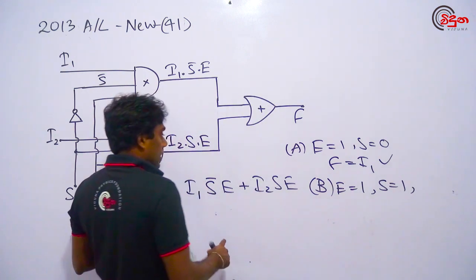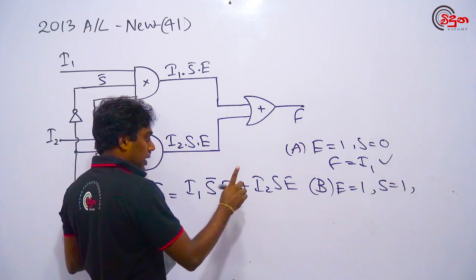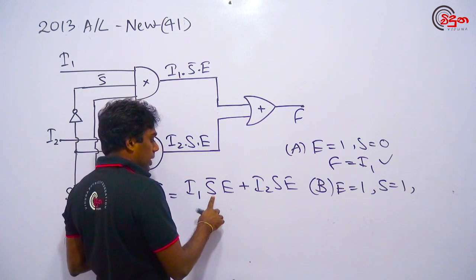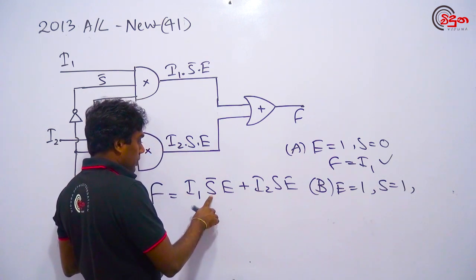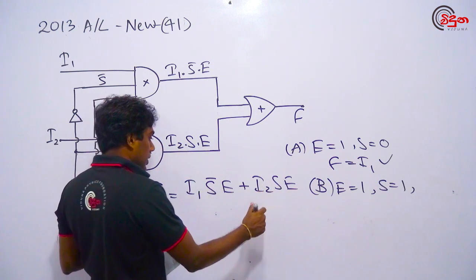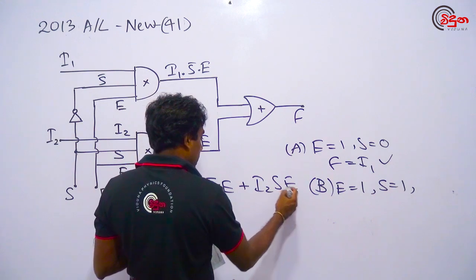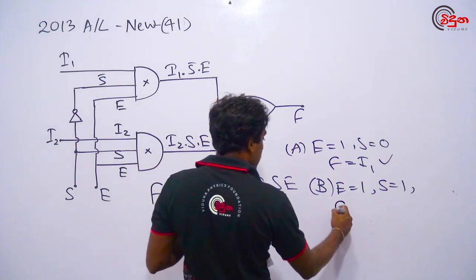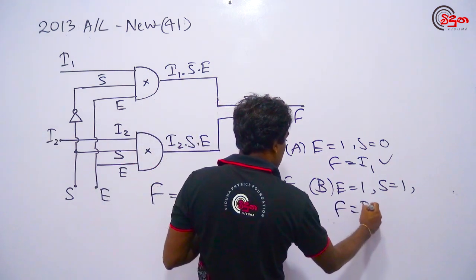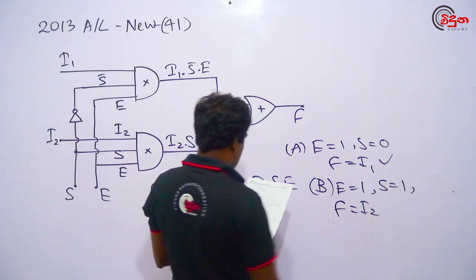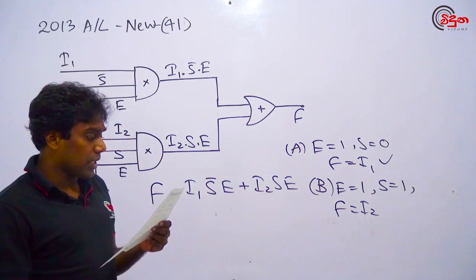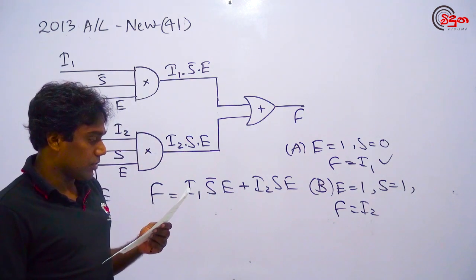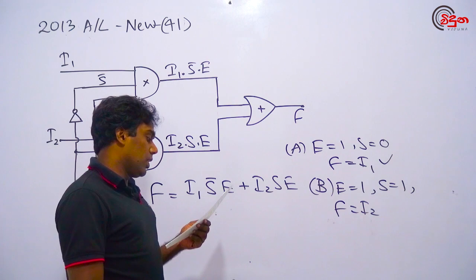So if we take the S to the other one, we will break the S to the other one. This is the F to I2, so we will break the S to E to the other one. We will break the E to B, we will break the S to the other one.